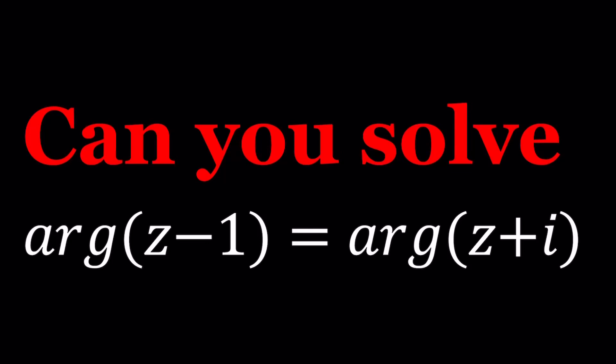Hello everyone, welcome to A plus B I. This channel is all about complex numbers, and in this video, we're going to be solving a locus problem. We're going to be finding Z values for which this equation is satisfied. We have argument of Z minus 1 equals argument of Z plus I, and we're going to be solving for Z.